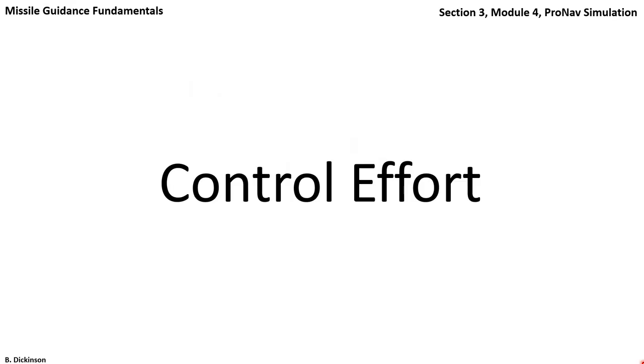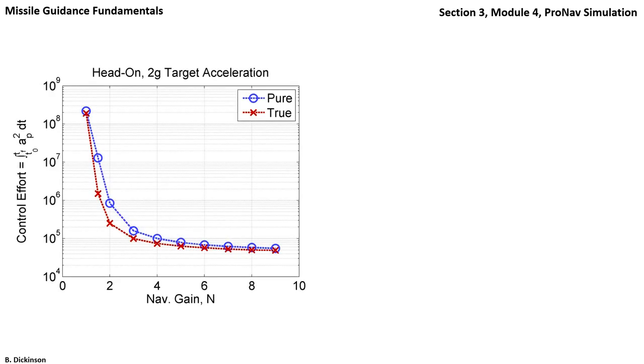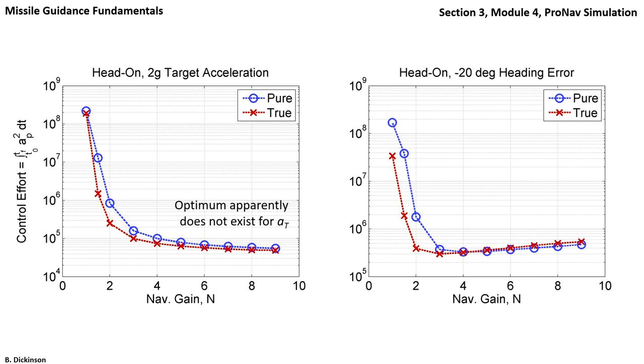Let's dig more into control effort over the entire course of the engagement. Here's a plot of control effort versus navigation gain for the accelerating target case. Both pure and true pronav are shown, and what we can see is a clear monotonic decrease of control effort as navigation gain increases. An optimum apparently does not exist for the case of an accelerating target for these forms of pronav, but it does for the case of negative 20 degrees heading error. For true pronav, that optimum was at 3, and for pure pronav, the optimum was at 4.